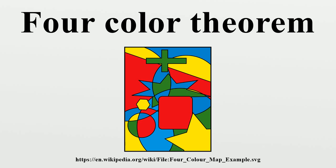Three colors are adequate for simpler maps, but an additional fourth color is required for some maps, such as a map in which one region is surrounded by an odd number of other regions that touch each other in a cycle.